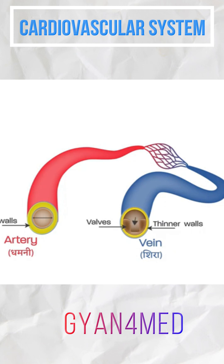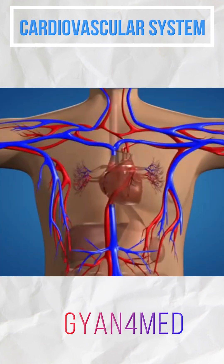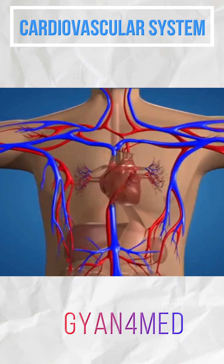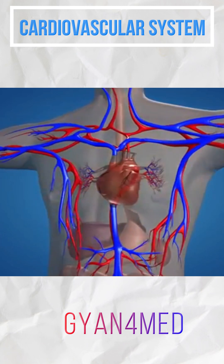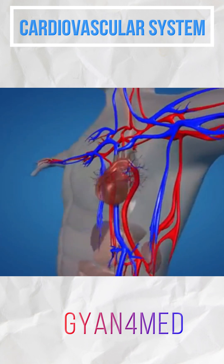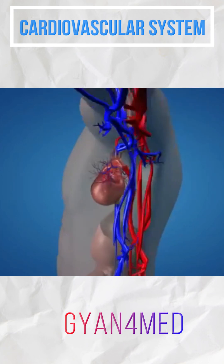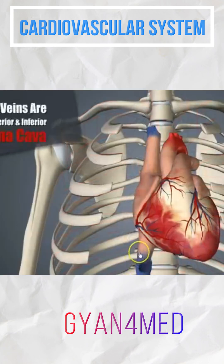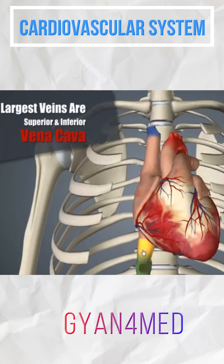Similar to the arteries, only in reverse, the blood flows from the venous capillaries into a system of veins via the largest veins, known as the superior and inferior vena cava.